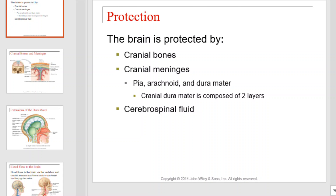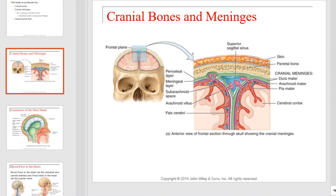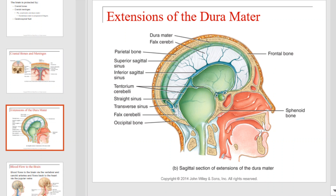Protection. The brain, our most important organ, is very well protected. It is protected by cranial bones, cranial meninges, and cerebrospinal fluid. Here we see the cranial bones and meninges close up as they encase or encapsulate the brain. This is a sagittal section of the extensions of the dura mater to further illustrate how they wrap around the brain to protect it.